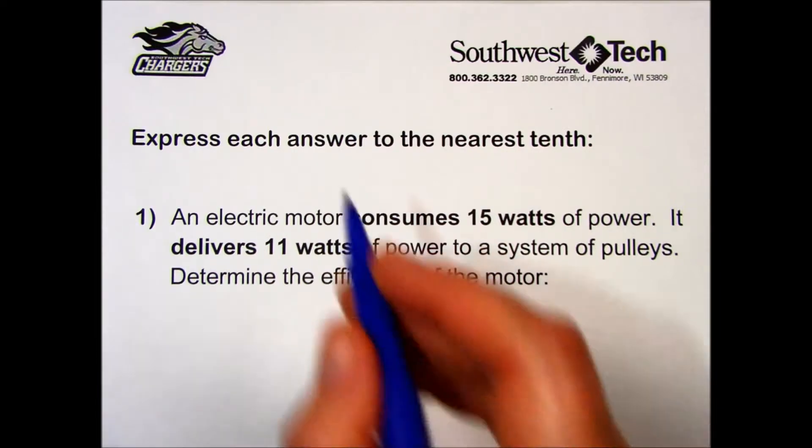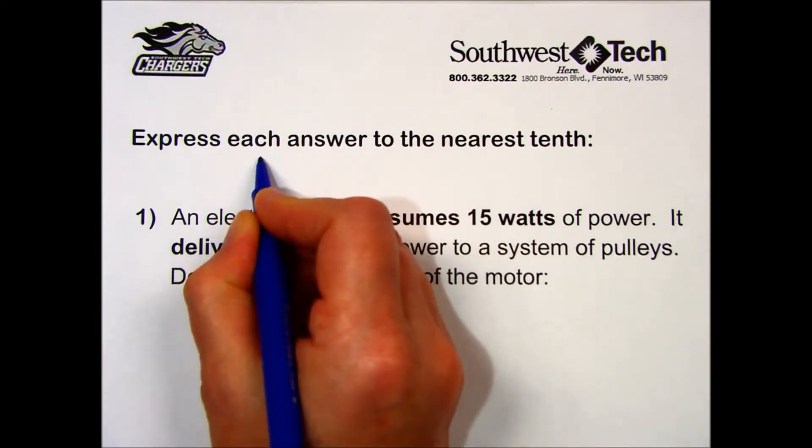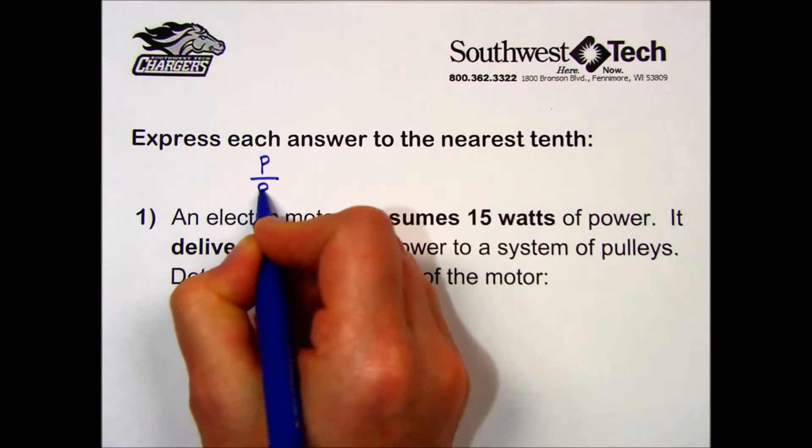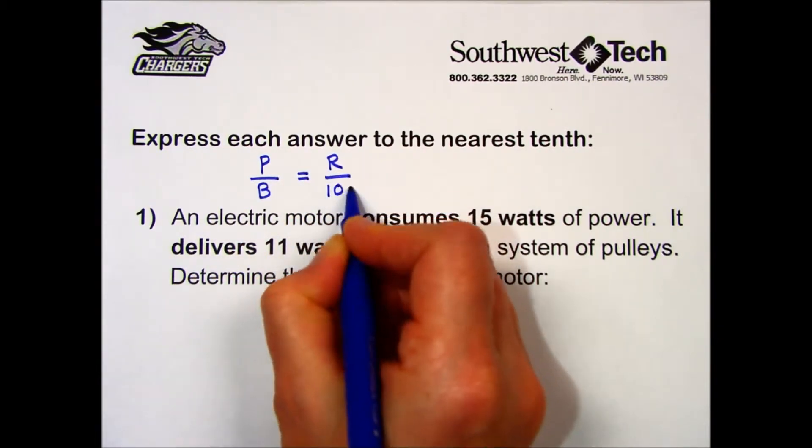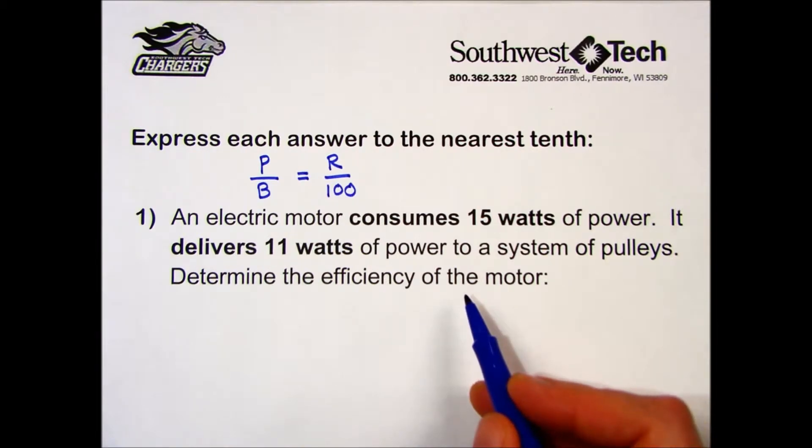We're going to use our familiar formula: part over base equals rate over 100. If you need to determine the percent efficiency of a system, you will call the input power the base and the output power the part.